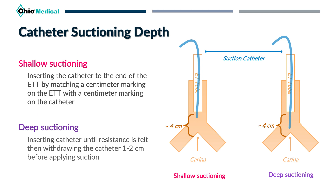Next, let's talk about catheter depth — how far should we insert the catheter into the artificial airway? Historically, clinicians were taught to perform deep suctioning where the catheter was advanced until resistance was met and the patient began coughing. This response is a direct result of a reflex from bumping the catheter into the carina, the area where the trachea bifurcates into the left and right main airways. This technique basically guarantees that the catheter will come into contact with airway tissue, and contacting the carina can also cause cardiac arrhythmias. Shallow suctioning is simply inserting the catheter only to the end of the endotracheal tube by matching the length markings on both the suction catheter and the endotracheal tube.